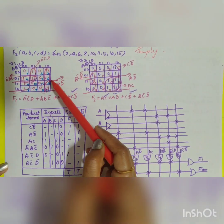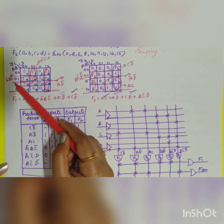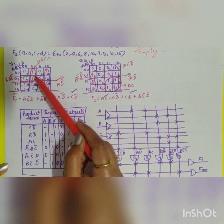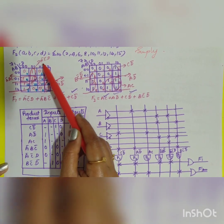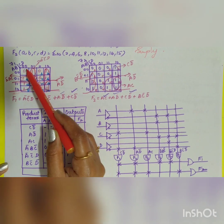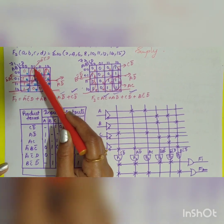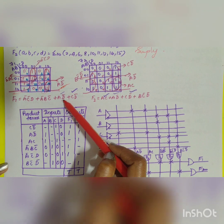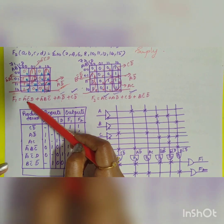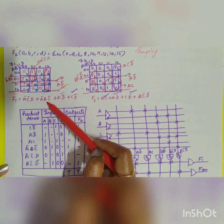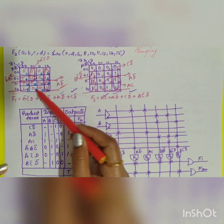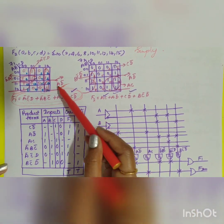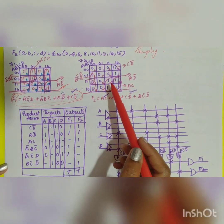Taking these two ones and these two ones, the value is AD̄ (A AND D complement). So F1 equals AD̄ + CD̄ + ĀC̄D + ĀBC̄. These are the sum of product terms for the first function.